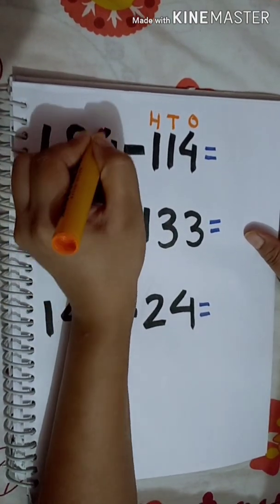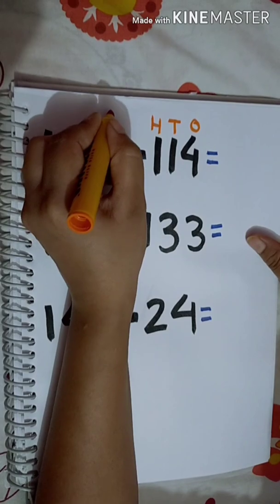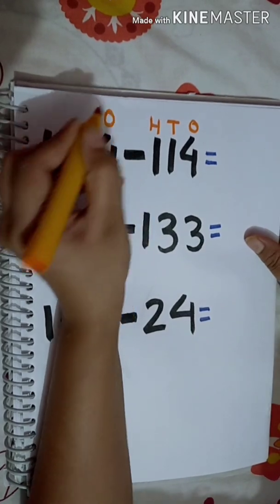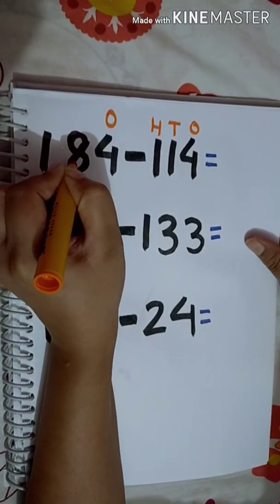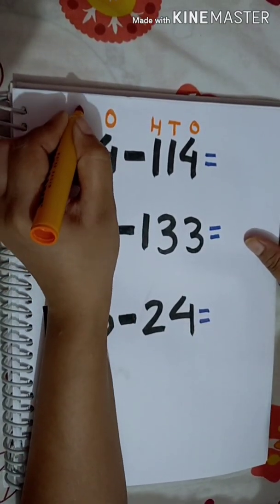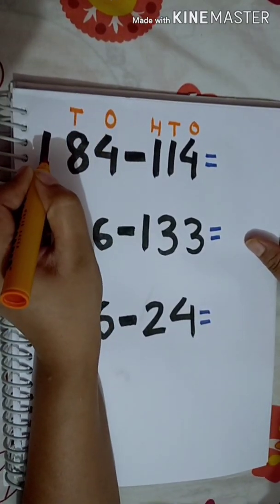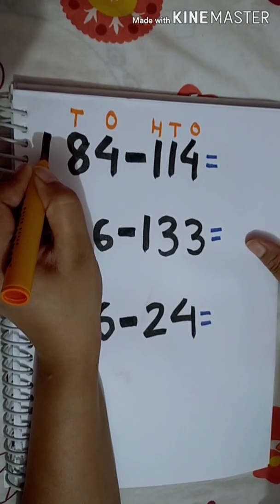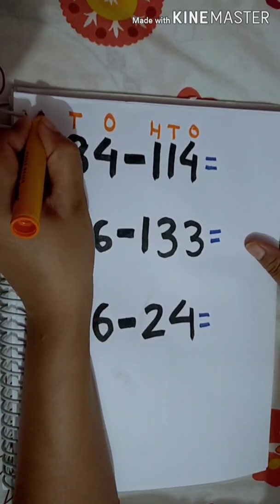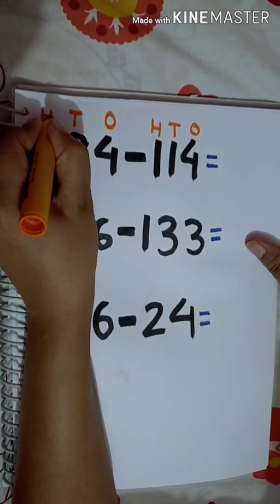In 184, 4 is in the 1's place, 8 is in the 10's place, and 1 is in the 100's place.